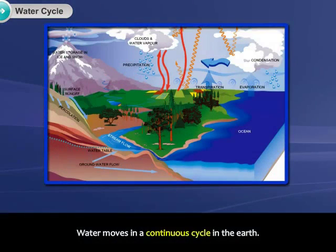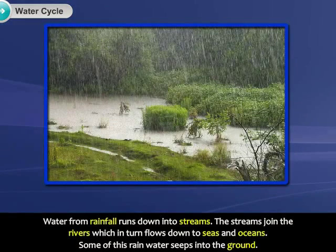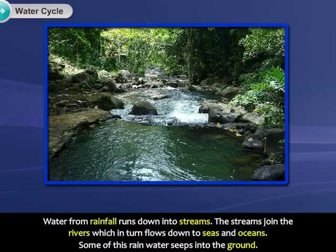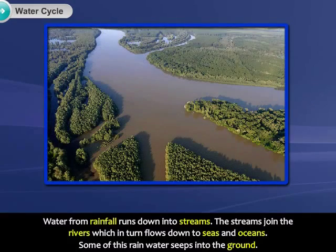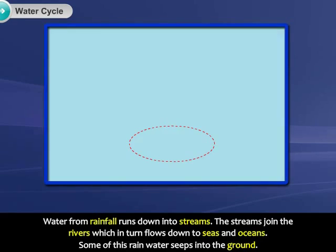Water moves in a continuous cycle in the earth. Water from rainfall runs down into streams. The streams join the rivers, which in turn flow down to seas and oceans. Some of this rain water seeps into the ground.